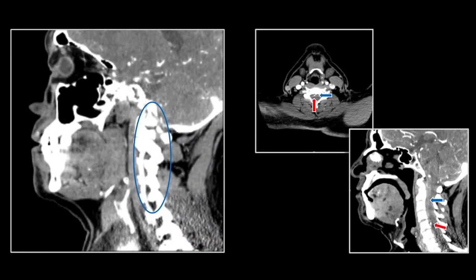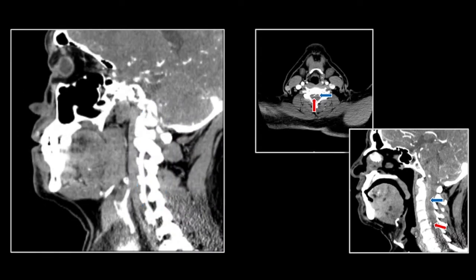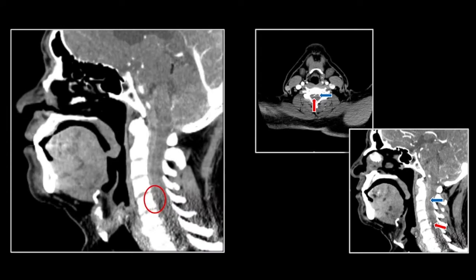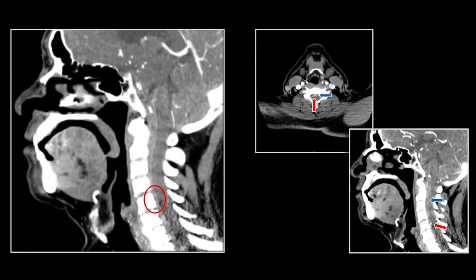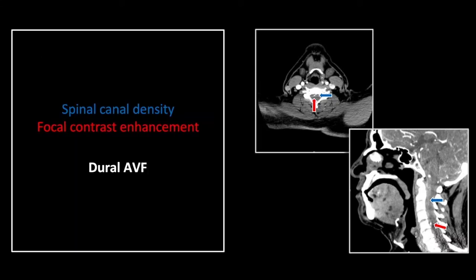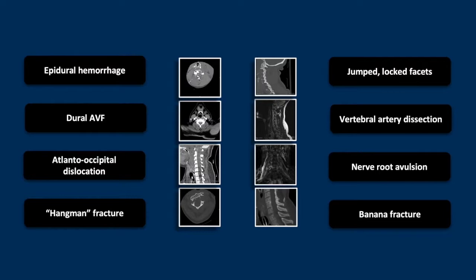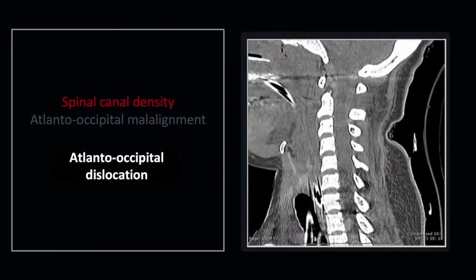There is that anterior density on the sagittal, and again the small dot of contrast enhancement — note the entering and exiting vessels. That was a traumatic dural arteriovenous fistula with extensive epidural hemorrhage. Our next case is an atlanto-occipital dislocation.